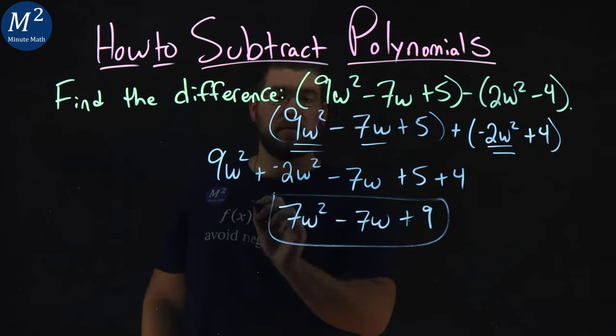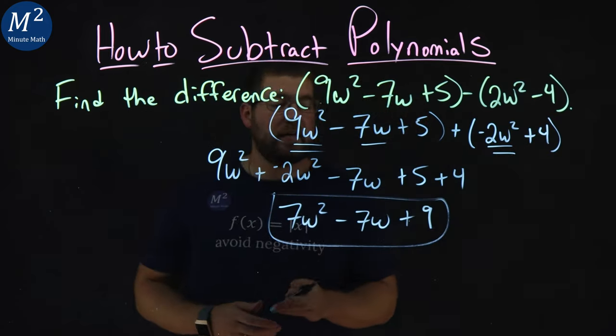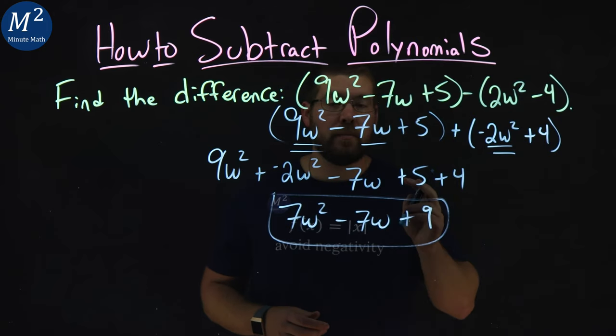And there we have it. We simplified our polynomials here. We subtracted them, and we got 7w squared minus 7w plus 9.